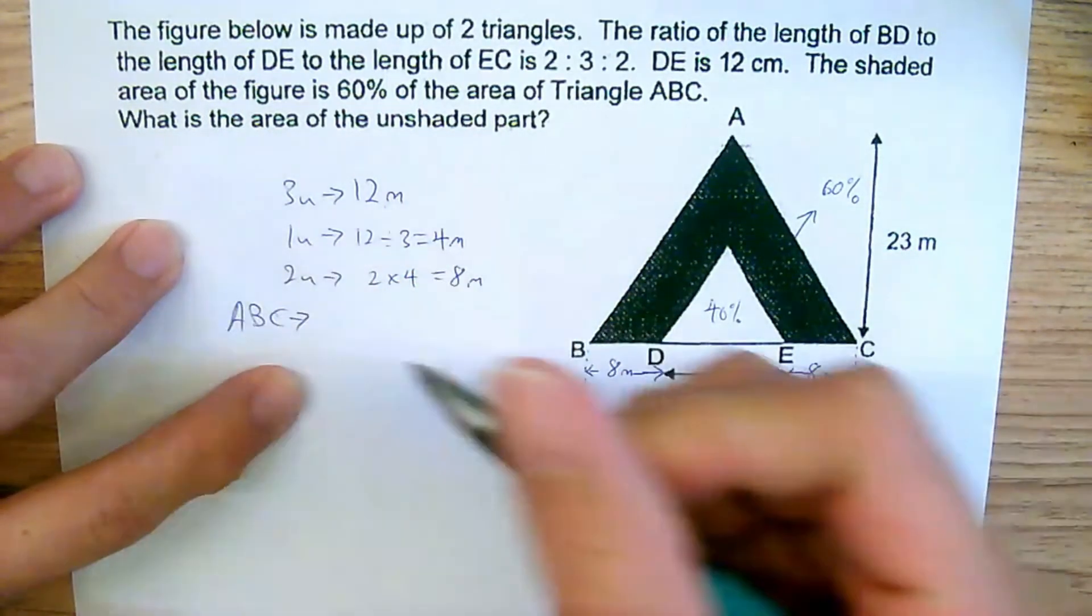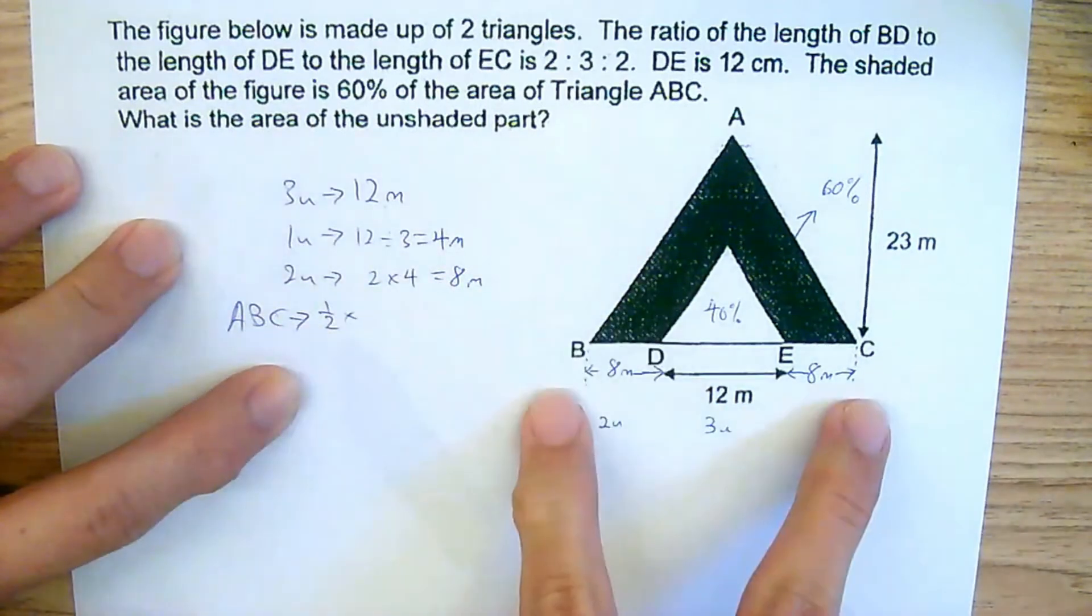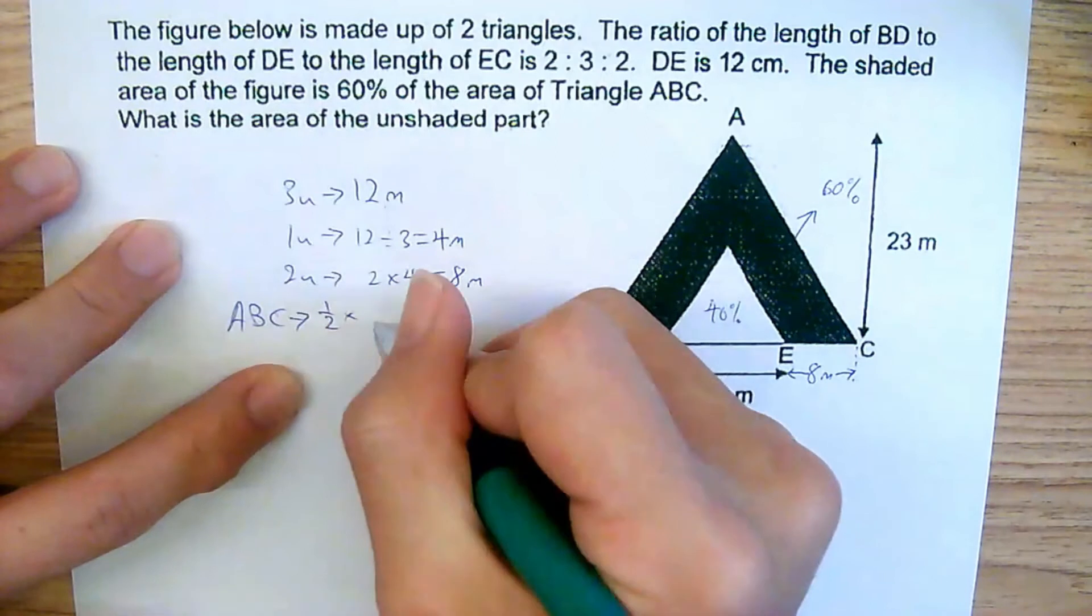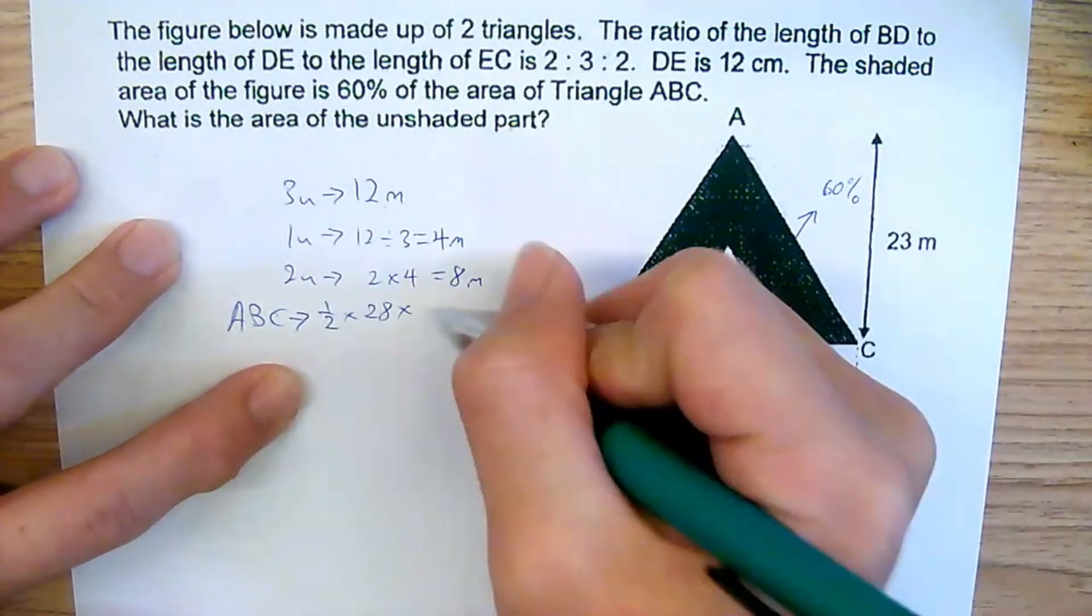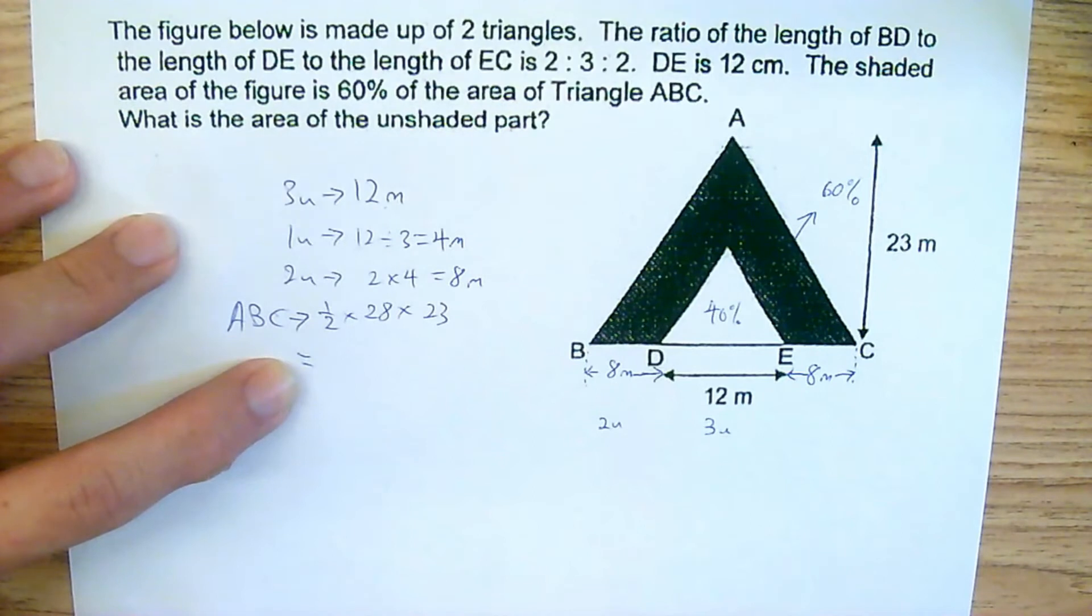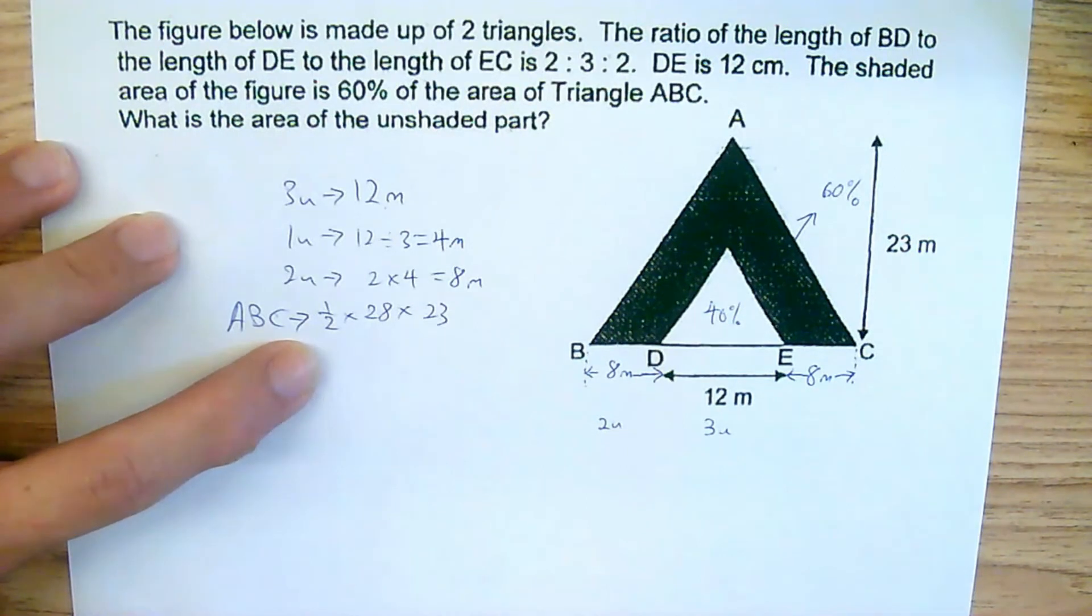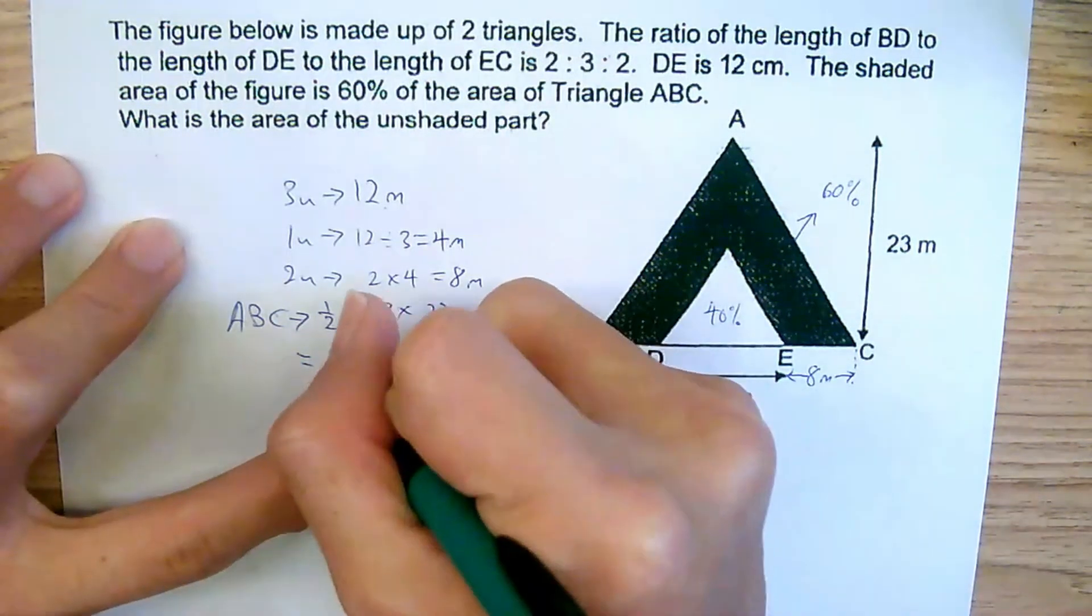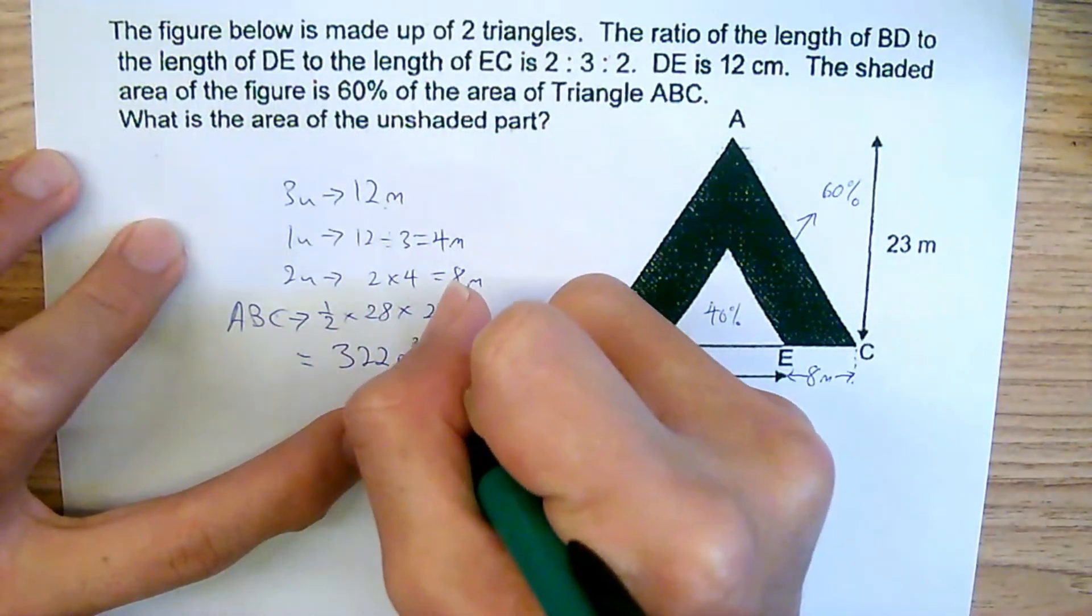So ABC will give us half multiplied by base multiplied by perpendicular height. So this will be 8 plus 12 plus 8 giving us 28 multiplied by 23. So let's just go ahead and throw that inside our calculator and let's find out what is the area of ABC. So it is half multiplied by 28 multiplied by 23, giving us 322 meters squared.